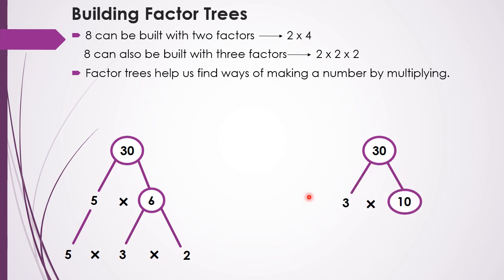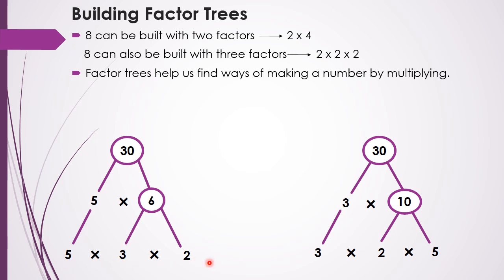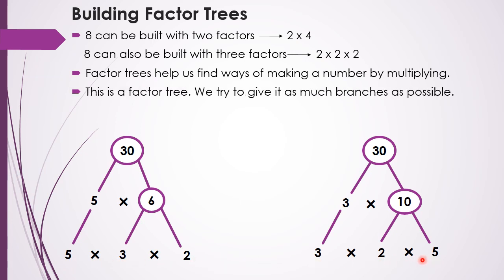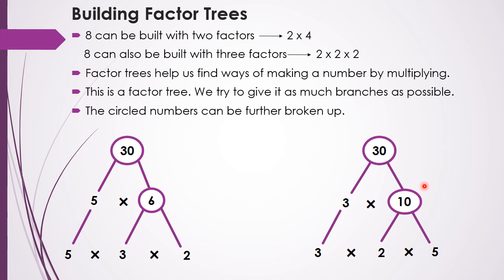We have another way to build a factor tree for 30. 30 can be written as 3 times 10. Here 3 is brought down as it is, and 10 can be further broken up as 2 into 5. The last row gives 3, 2, and 5. We can see that the last row in both factor trees is the same: 5 times 3 times 2 and 3 times 2 times 5. We try to give as many branches as possible, and the circled numbers can be further broken up.